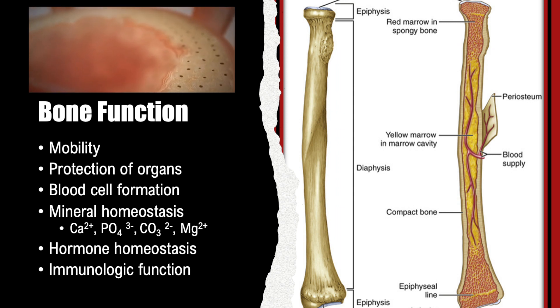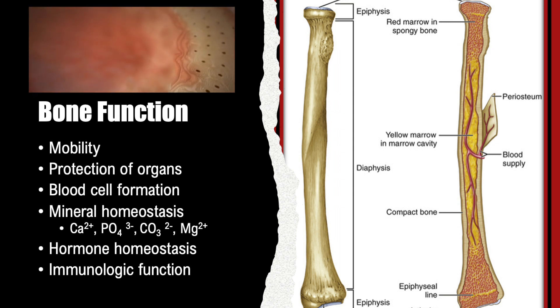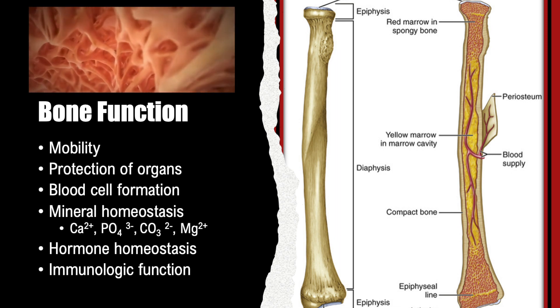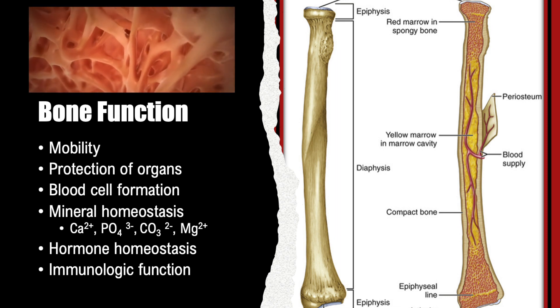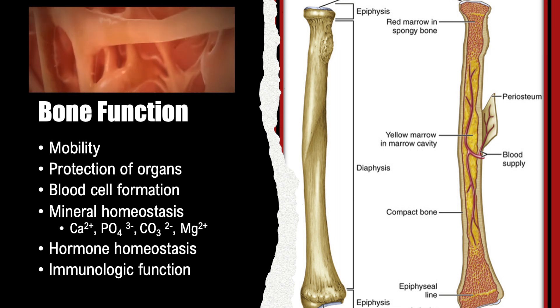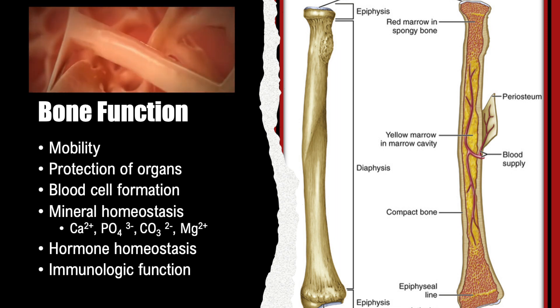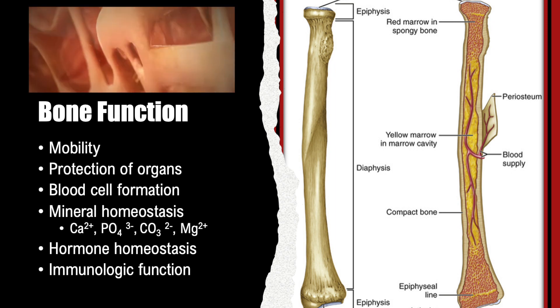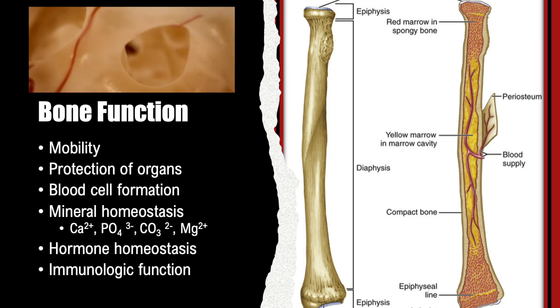There are two types of bone marrow in bones: red marrow, the site of blood cell formation, which will be explored in the hematologic section of this course, and yellow marrow, which is mostly adipose.